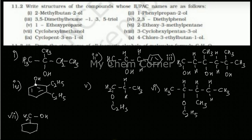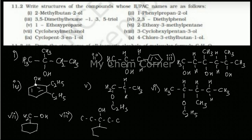The eighth one is 3-cyclohexylpentane-3-ol. The parent hydrocarbon is pentane-3-ol, so draw a five-carbon chain. At position 3 place an OH, and also at position 3 place a cyclohexyl group — a six-carbon ring. Fill in the remaining hydrogens based on the valency of carbon, and that's the final answer for the eighth structure.